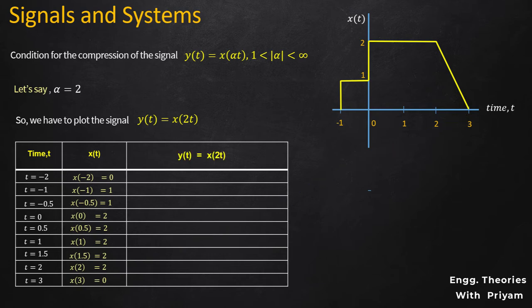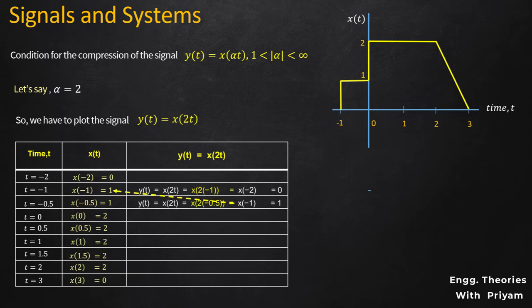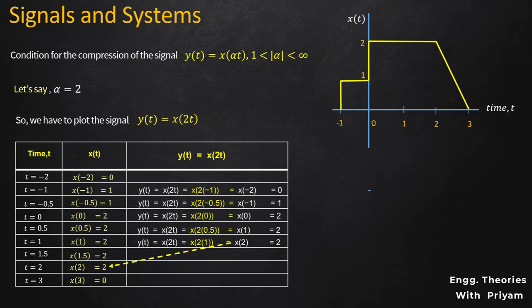Now we calculate Y(T) = X(2T) for different values of T. When T = -1, Y(T) = X(-2) = 0. When T = -0.5, Y(T) = X(-1) = 1. When T = 0, Y(T) = X(0) = 2. When T = 0.5, Y(T) = X(1) = 2. When T = 1, Y(T) = X(2) = 2. When T = 1.5, Y(T) = X(3) = 0. When T = 2 and T = 3, Y(T) = X(4) and X(6), both equal to 0.